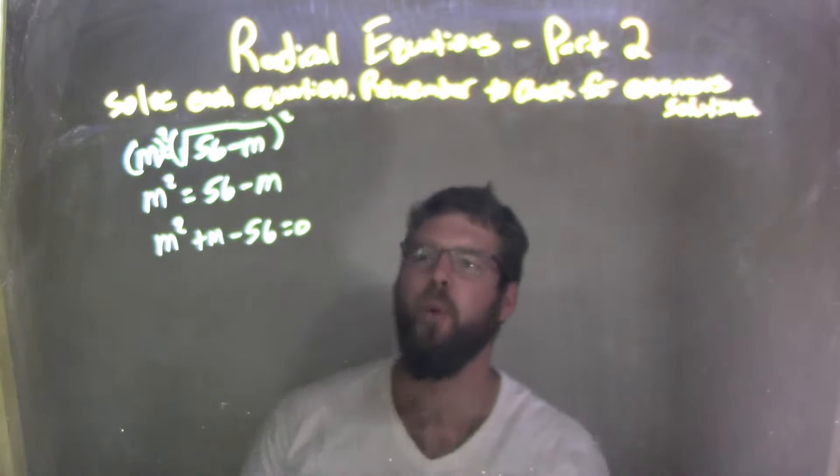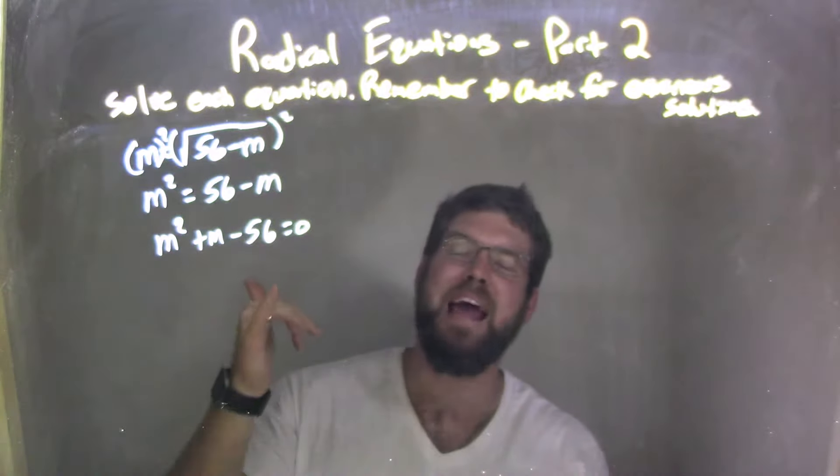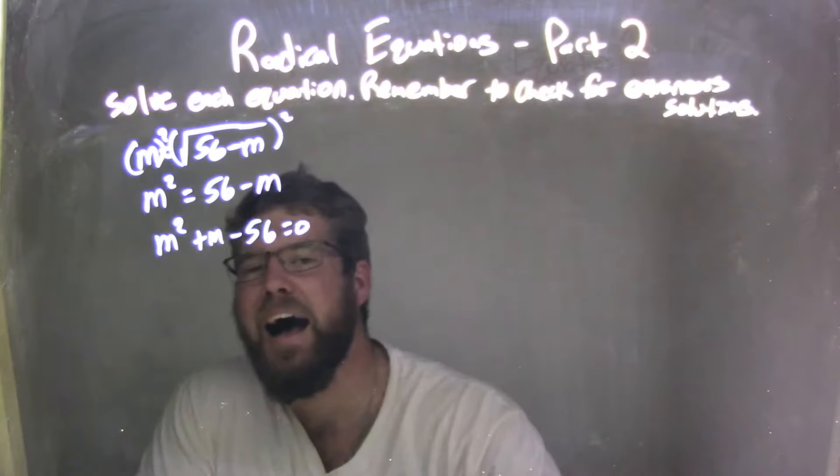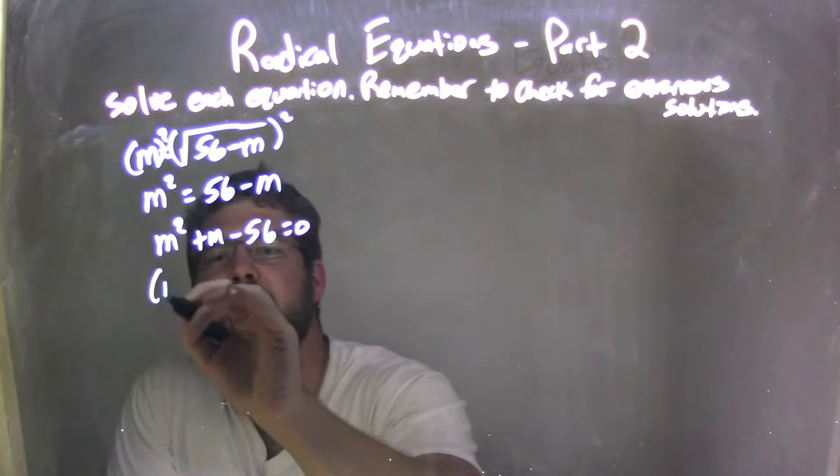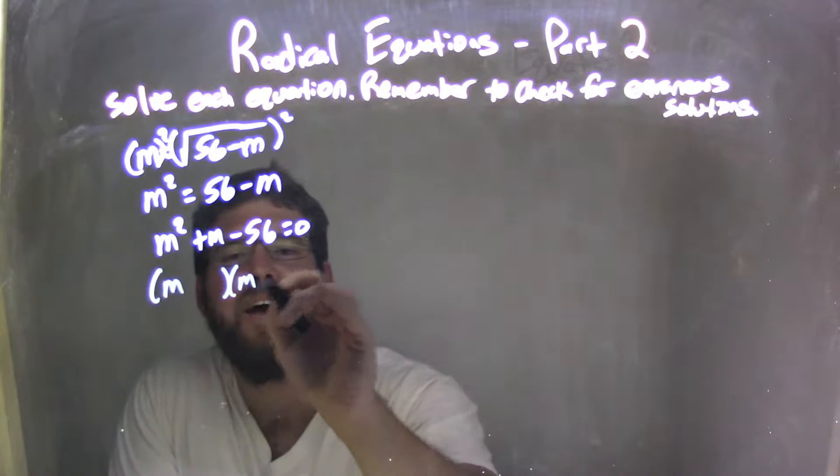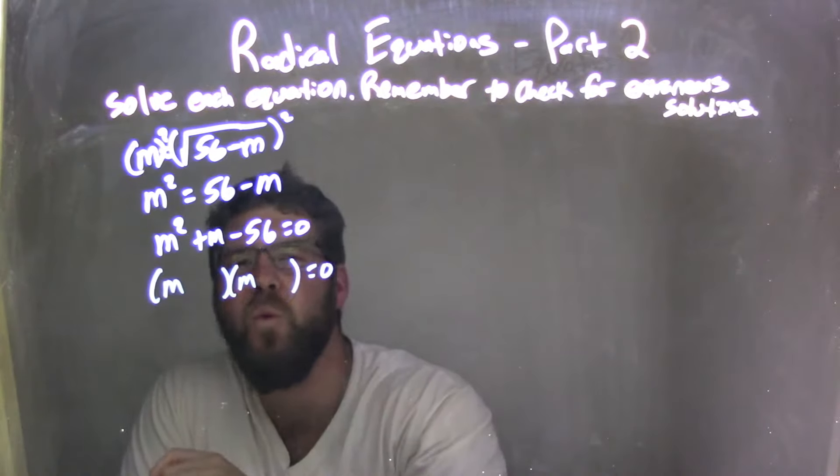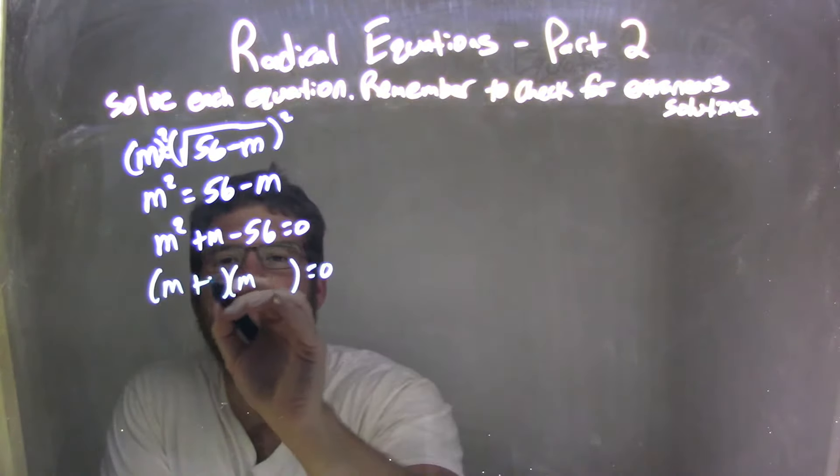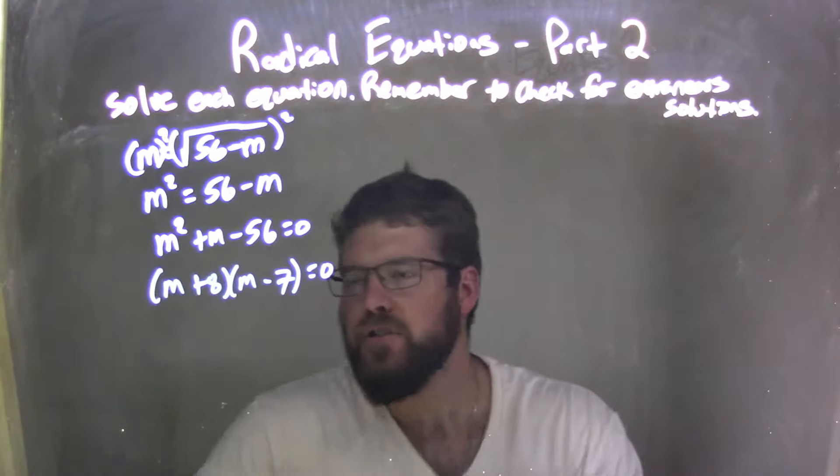Let's factor that bad boy. What multiplies to be negative 56 but adds to be m? I'm thinking some 7s and some 8s maybe. So we have m's here, looking at it, positive 8, negative 7.